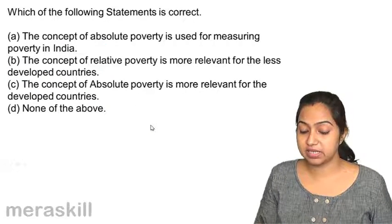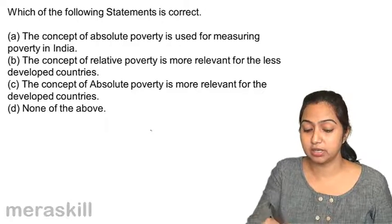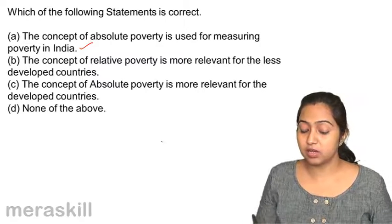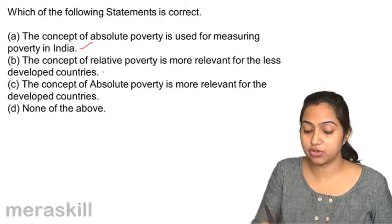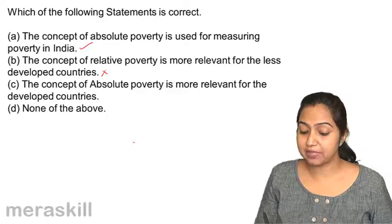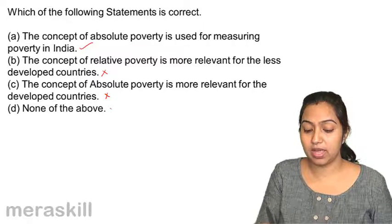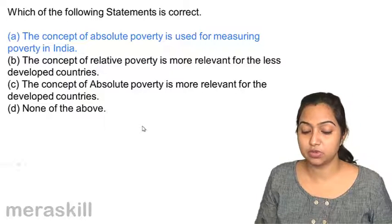Which of the following statements is correct? The concept of absolute poverty is used for measuring poverty in India. The concept of relative poverty is more relevant for less developed countries — No. The concept of absolute poverty is more relevant for developed countries — No. None of the above. So the correct answer is: the concept of absolute poverty is used for measuring poverty in India.